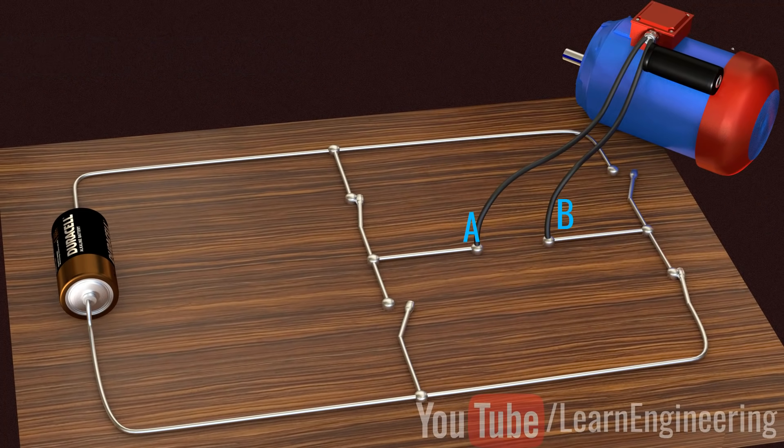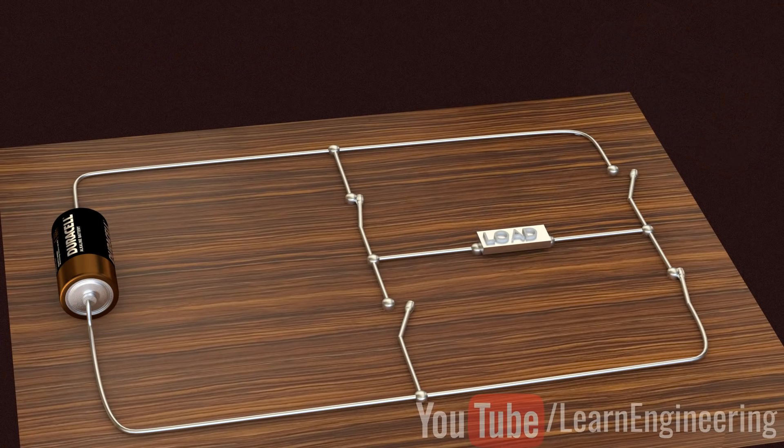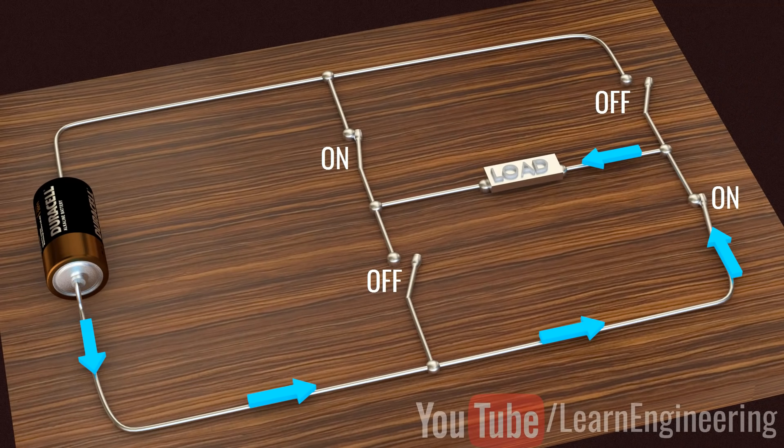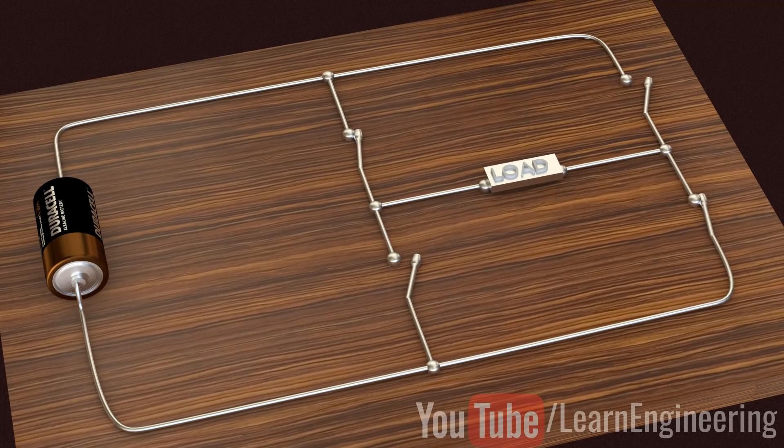To make this circuit analysis easier, let's replace this actual load with a hypothetical load. Just note the current flow when switches S1 and S4 are on and S2 and S3 are off. Now just do the reverse and observe the current flow.